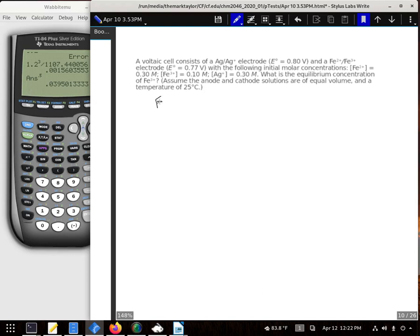So we have an E of a cell that we can actually determine by just taking the largest minus the smallest. Now, that's defined our iron as the anode, and this is the cathode.